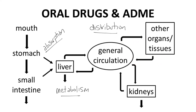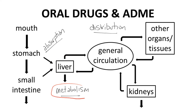Distribution generally includes the drug target — the intended site of action of the drug. As the drug circulates in the body, it will sometimes pass through the liver. With each pass through the liver, more drug will be metabolized and the plasma concentration will be reduced.